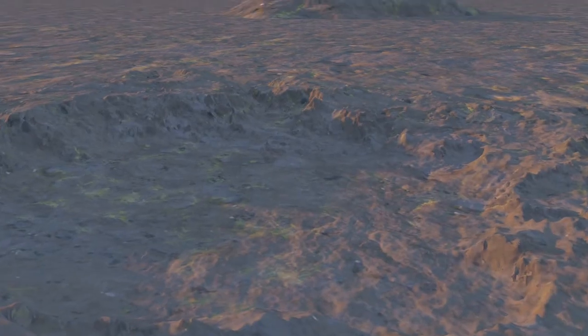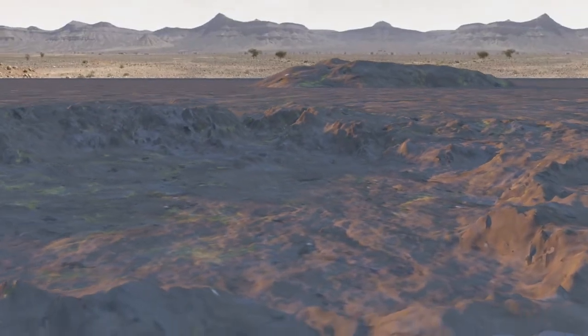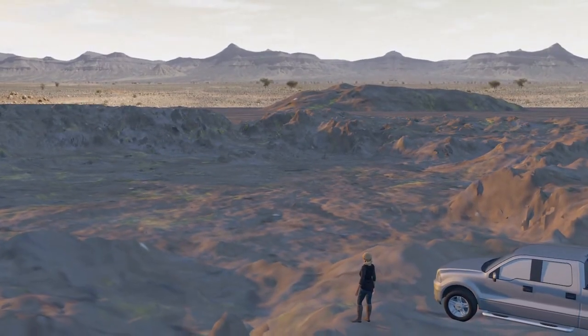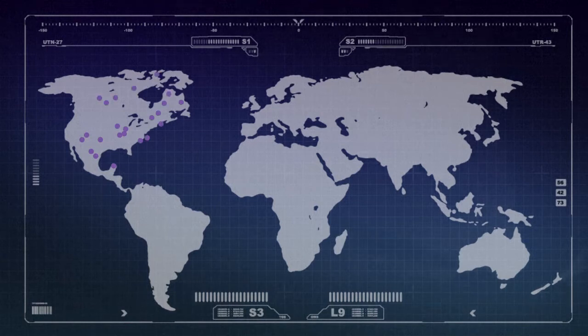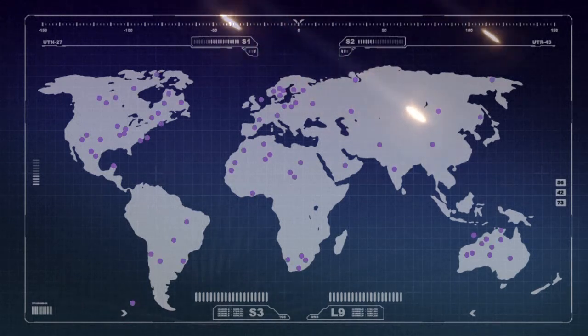There are 190 craters more than 50 meters wide visible on the Earth's surface. Around 5,000 meteorites weighing more than one kilogram crash down every year, but it's very rare to see one actually falling.